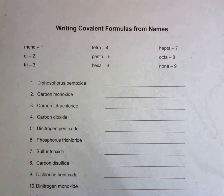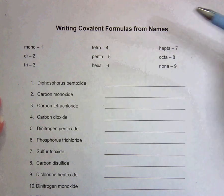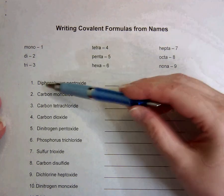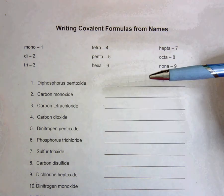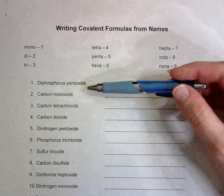Writing covalent formulas from names. Just like what we did on the last worksheet, where we were taking a compound and turning it into the name of that compound, now we're going to do the opposite. We're going to take the name and make the compound from it.